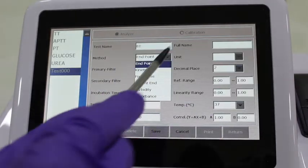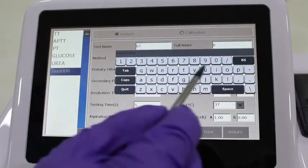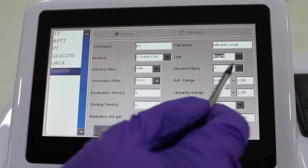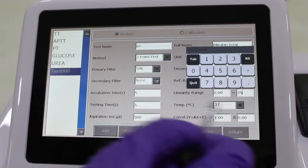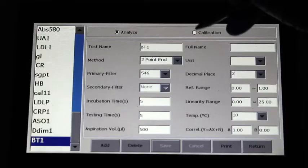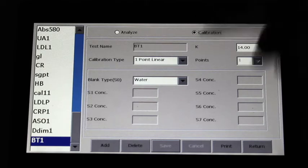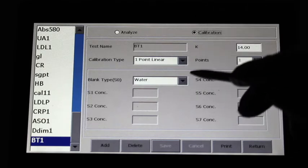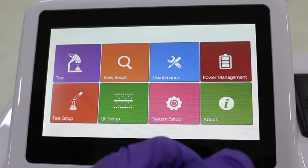Now in the test setting, go to analyze new page and program for bilirubin total. Add test name, unit, filters, incubation and read time, decimals, normal range, linearity, temperature, etc. Now go to calibration page and enter type of calibration as one point and add the factor value. Here blank is sample blank, but water blank is selected as sample blank option is not displayed.